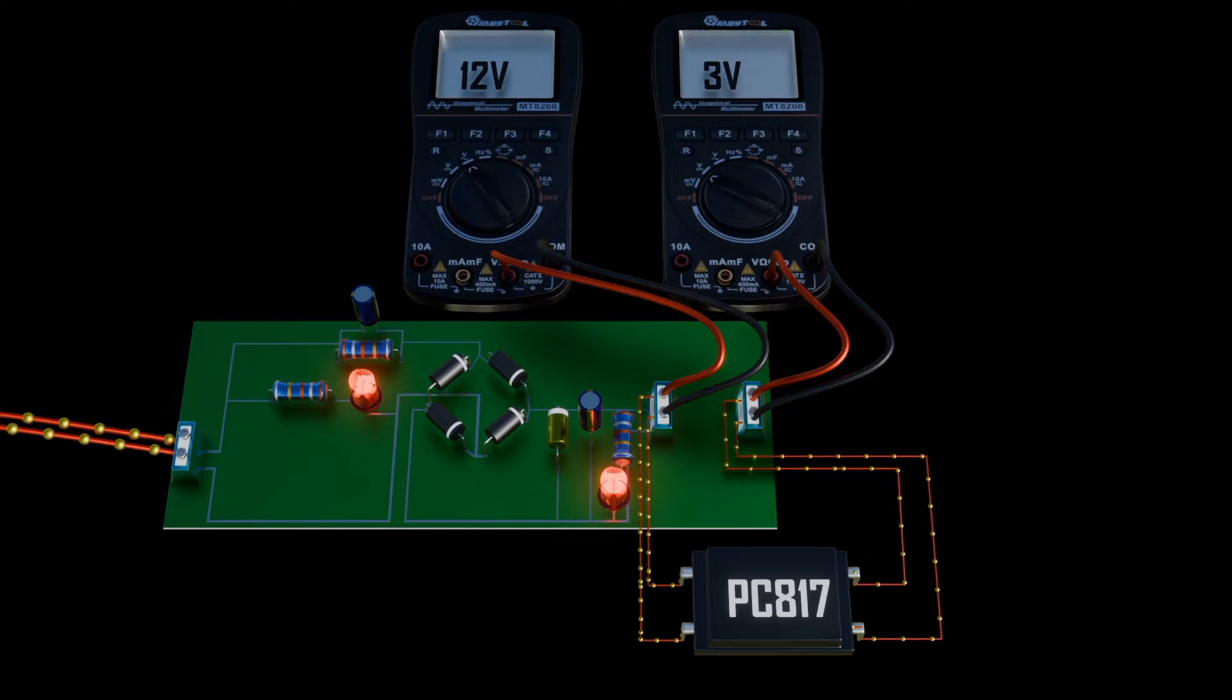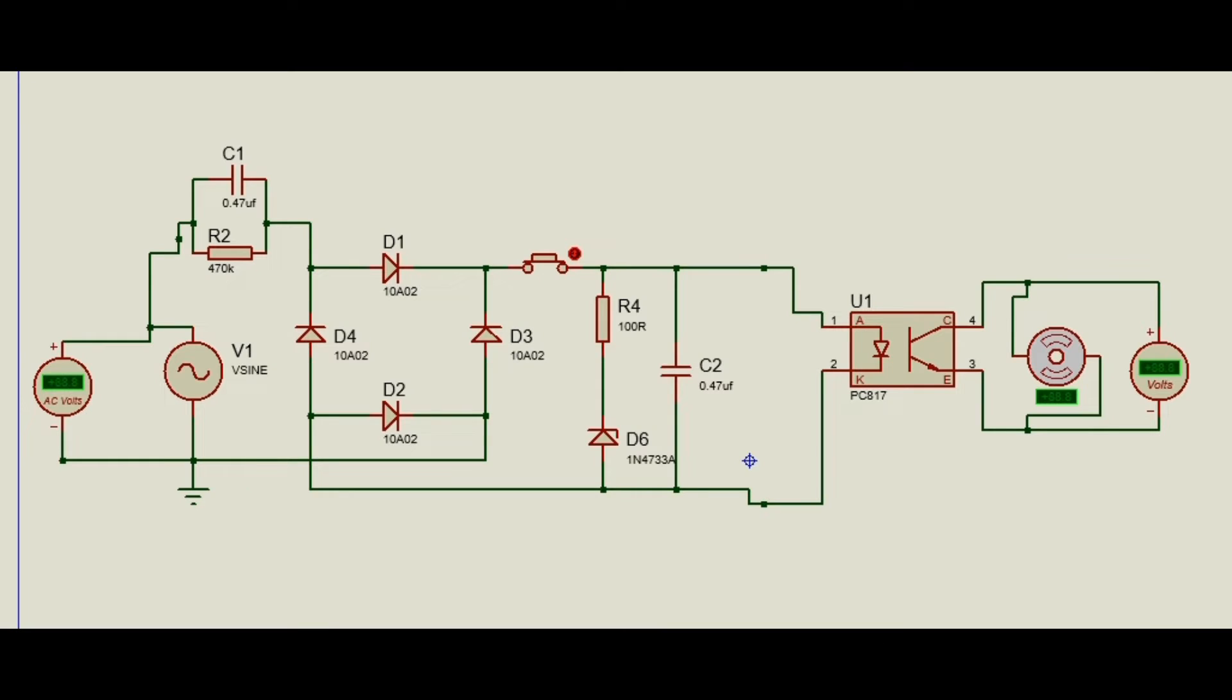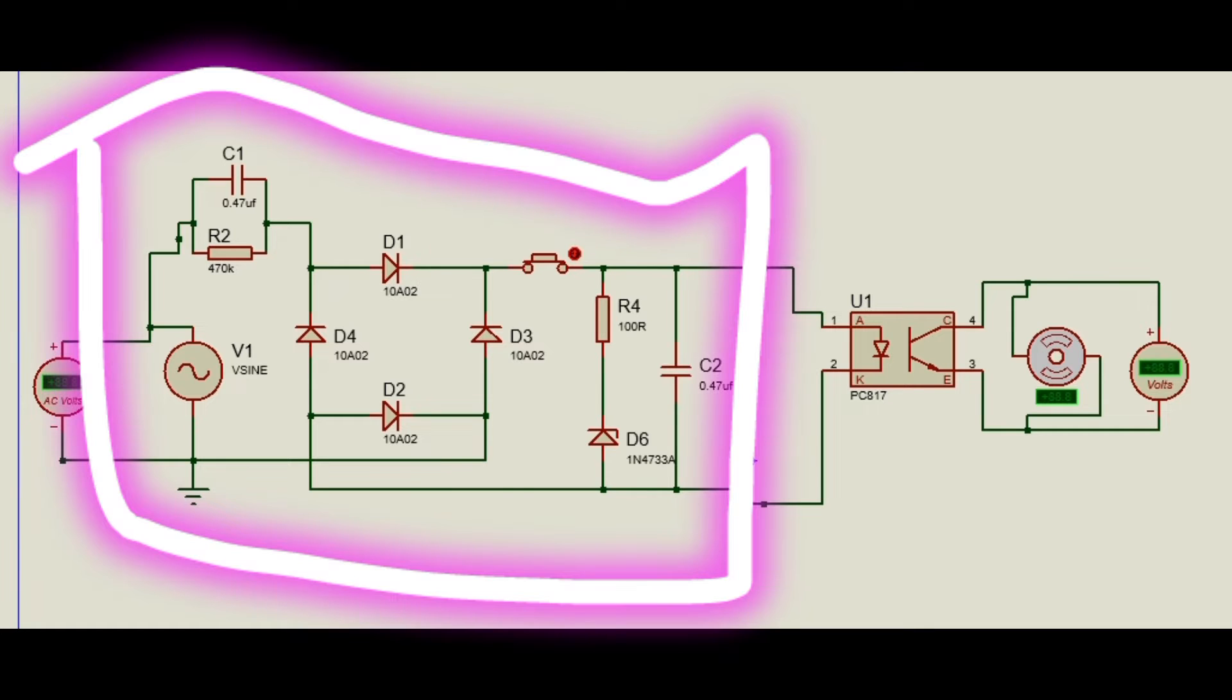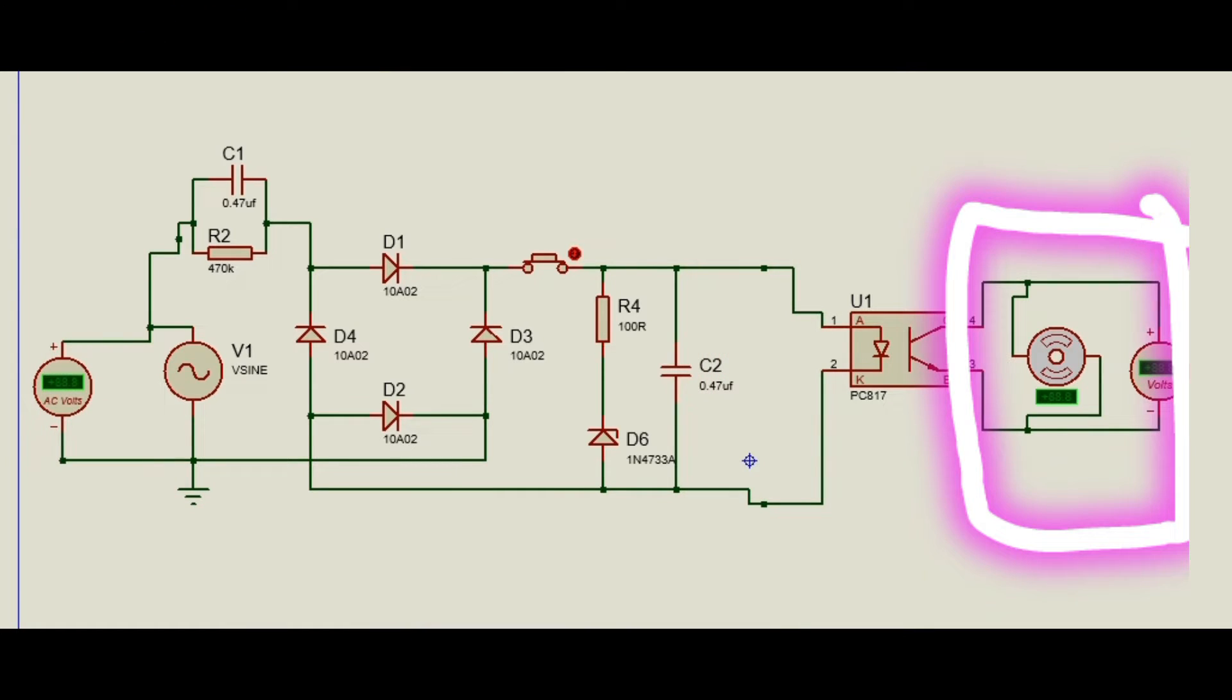The primary purpose of optocoupler is to provide electrical isolation while allowing signal transmission. This is particularly useful in situations where high voltage circuits need to communicate with low voltage circuits without direct electrical contact, thereby protecting the low voltage side from potential high voltage spikes.